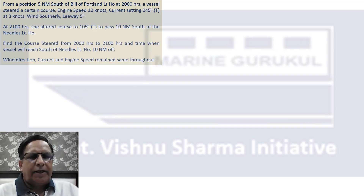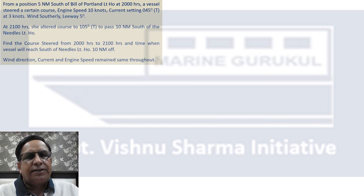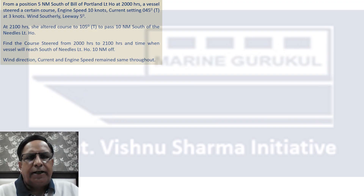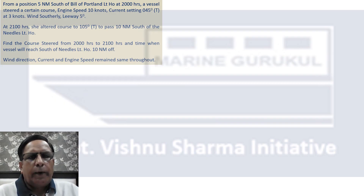From a position five nautical miles south of Bill of Portland Light at 2000 hours, a vessel steered a certain course; engine speed 10 knots, current setting 045° true at three knots, wind southerly, leeway five degrees. At 2100 hours she altered course to 105° true to pass 10 nautical miles south of the Needles Light. Find the course steered from 2000 hours to 2100 hours and the time when the vessel will reach 10 miles south of Needles lighthouse. Wind direction, current, and engine speed remained the same throughout.